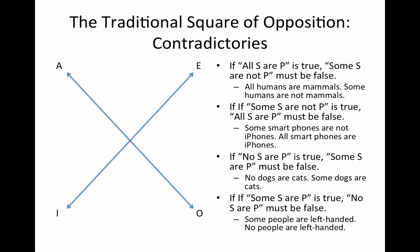Go ahead and pause the video to take a look at the examples. I want to point out that the examples are meant to pump your intuitions about the correctness or illegitimacy of certain inferences. But what we want to bear in mind is that the logical structure — not the content — is what makes an inference legitimate or illegitimate. When we move on, I'm thinking of the Venn diagrams that will offer us a visual representation of the logical structure of each of these proposition types.